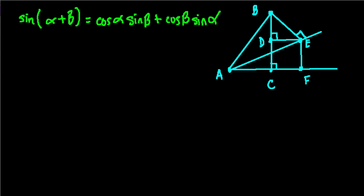In this video, we're going to look at a proof of this trig identity: that the sine of alpha plus beta equals the cosine of alpha times the sine of beta plus the cosine of beta times the sine of alpha.